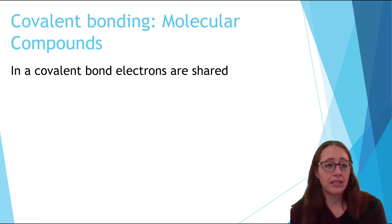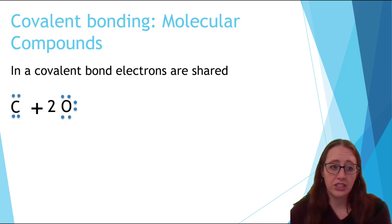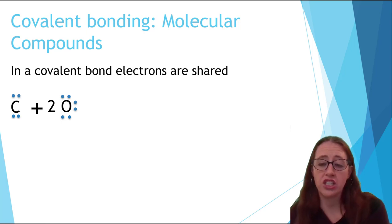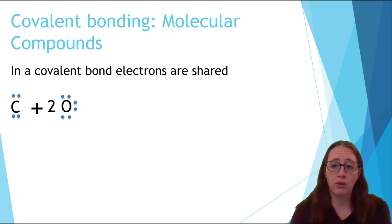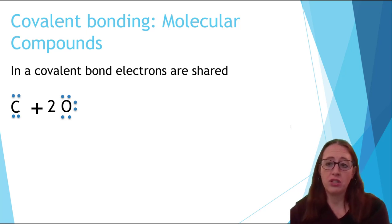So let's look at something like carbon dioxide. Carbon only has four valence electrons, and so it would need to gain four. Oxygen has six electrons, so it needs to gain two. This means that for everything to have a full octet, carbon needs to share two electrons with each oxygen, giving it four extra total, while each oxygen only gets two extra total.